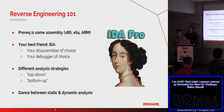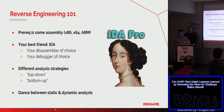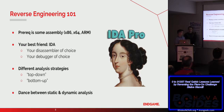There are other tools out there such as Radare2 and Hopper, but IDA Pro is by far the most advanced and full-featured. When you're analyzing something in IDA Pro, you can employ different analysis strategies. We've grouped these strategies into two categories: top-down and bottom-up. Additionally, when you're reversing, you want to use a healthy dose of both static and dynamic analysis, which we'll mention in upcoming slides.